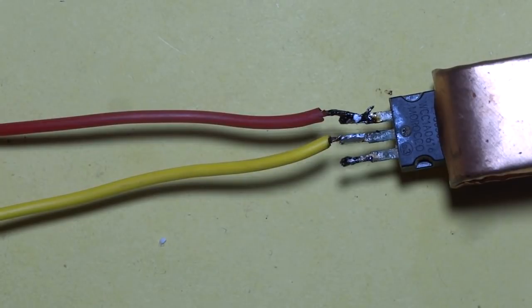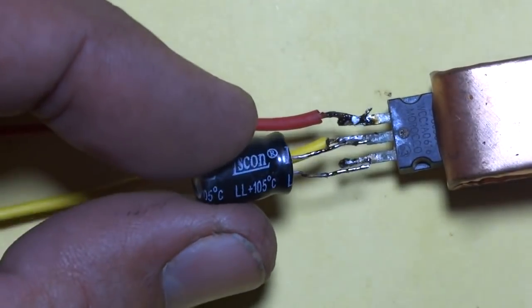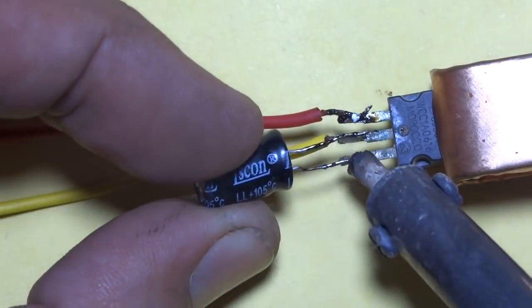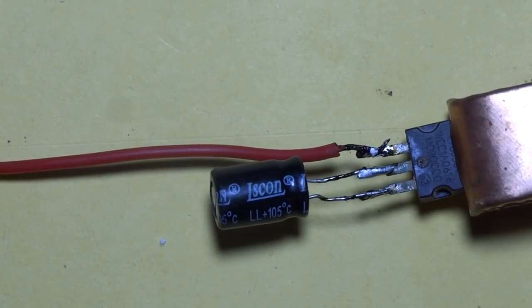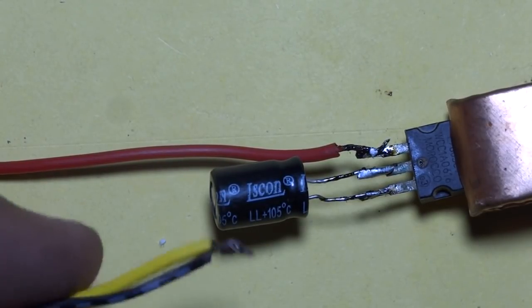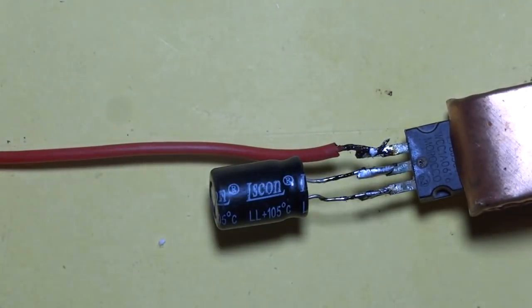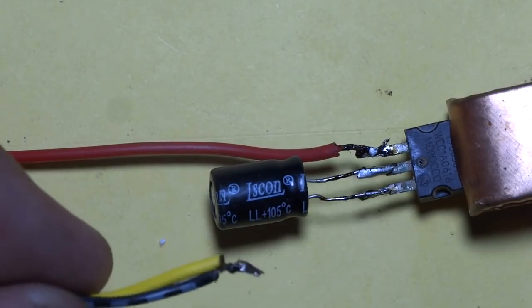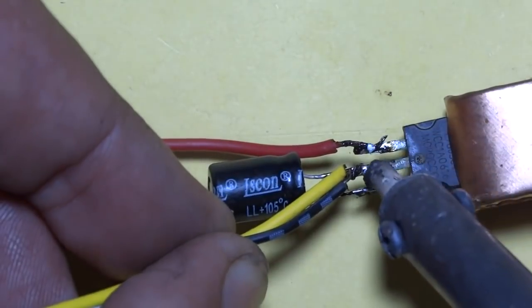Now I am soldering condenser or capacitor. Now I am soldering output point. Keep in mind, output and input negative wires are same.